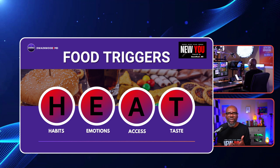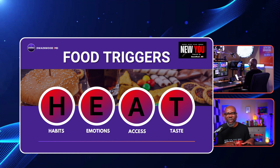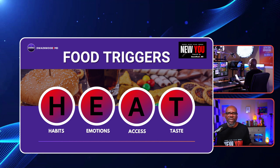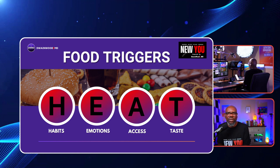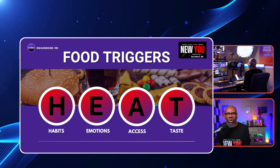Begin working on those plans. For the week, draw four squares on your paper — H-E-A-T — and every time you eat out of habit, emotion, access, or taste, jot it down. Then come up with a plan: how do I deal with triggers of habit, triggers of emotion, triggers of access, triggers of taste?